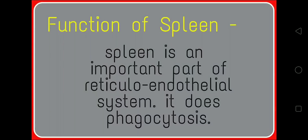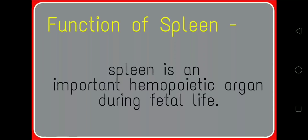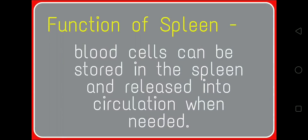The functions of the spleen: the spleen is an important part of the reticuloendothelial system and performs phagocytosis. It is an important hematopoietic organ during fetal life. Blood cells can be stored in the spleen and released into the circulation when needed.